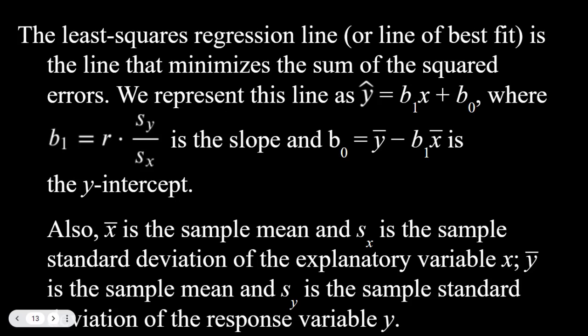We represent this line as ŷ (y-hat) equals b₁ times x plus b₀, where b₁ is equal to r times sᵧ over sₓ — that's the slope — and b₀ is ȳ minus b₁ times x̄, which is the y-intercept. So it's our normal slope-intercept form; they're just using slightly different lettering to represent it.